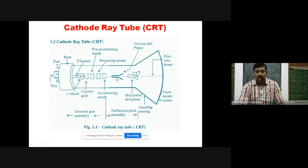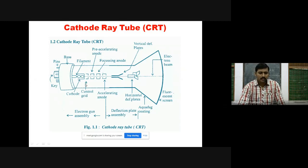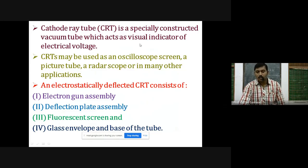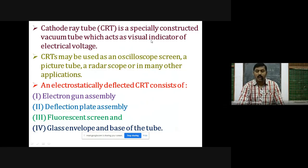The next part is the fluorescent screen, on which the electron beam is incident, and from which we observe the image or waveform. So these are the constituents of the cathode ray tube. The CRT is a specially constructed vacuum tube which acts as a visual indicator of electrical voltage. The voltage fluctuates the electron beam, and accordingly we have a visual effect. CRTs may be used as an oscilloscope screen, a picture tube, radar scope, or in many other applications.